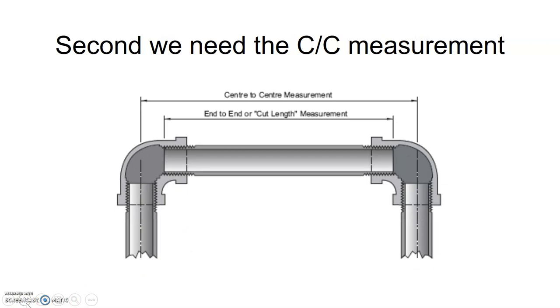The second thing we need to do is know the center to center measurement. So we have to be given a center from one fitting over to another fitting. From there, we can now move forward to find our end-to-end, our actual cut piece.